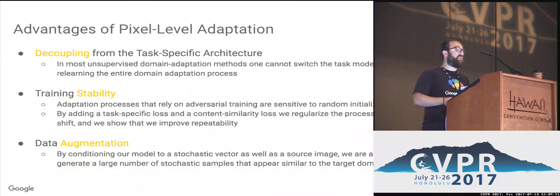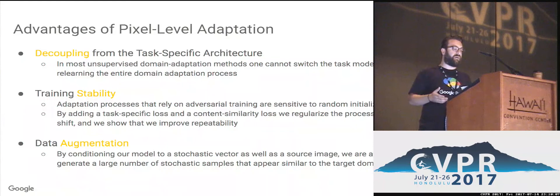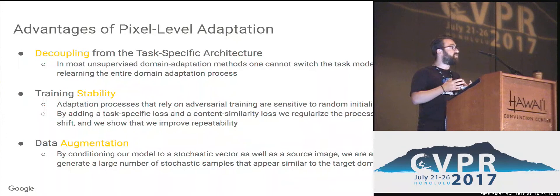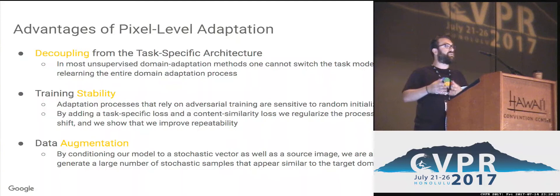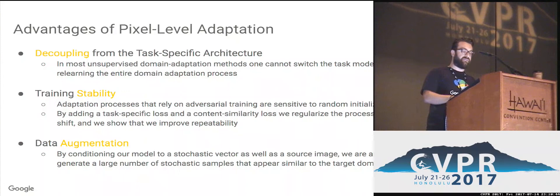Some of the advantages of PixelDA include the de facto decoupling from the task-specific architecture, which is very important. In most unsupervised domain adaptation methods one cannot simply switch the task model without relearning the entire domain adaptation process. In PixelDA, we can keep the generator fixed and simply retrain the new task model. Regarding training stability, adaptation processes relying on adversarial training are sensitive to random initialization; by adding task-specific and content similarity losses we regularize the process and improve repeatability. For data augmentation, by conditioning our model on a stochastic vector as well as a source image, we can generate a large number of stochastic samples that appear similar to the target domain.